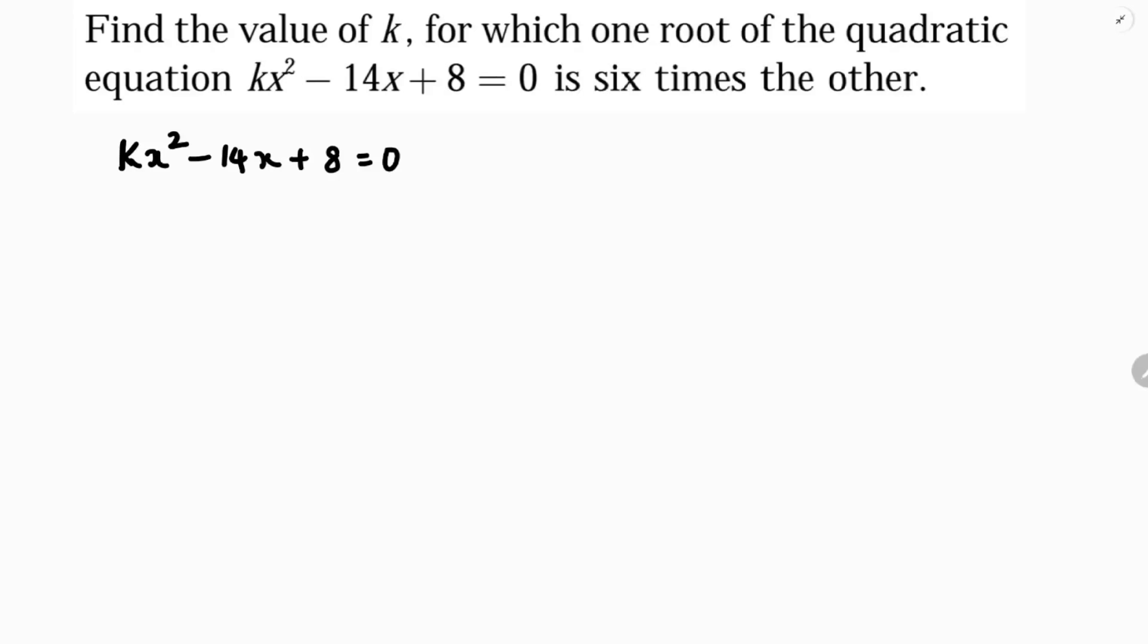I will consider the two zeros as alpha and beta. If I consider one as alpha, then beta will be 6 alpha.